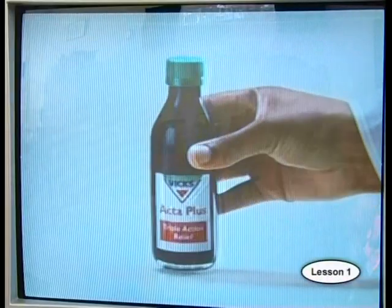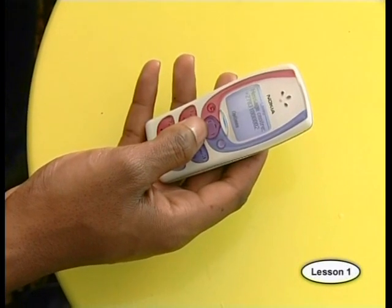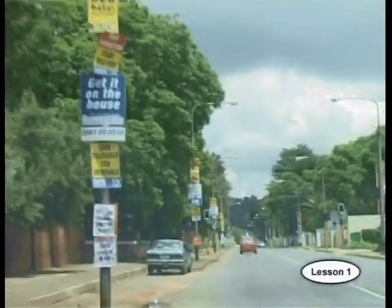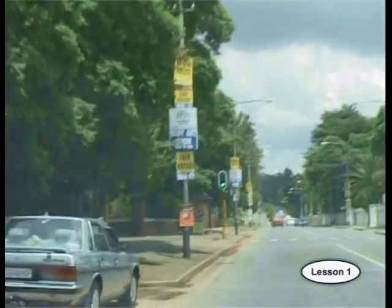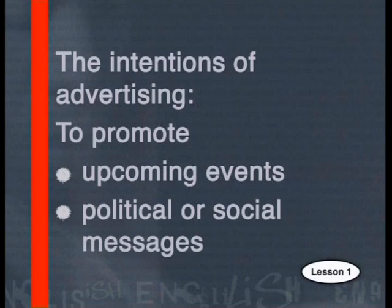Now, if you were really paying attention, you may also recall what things were being advertised. Some adverts were trying to get you to buy products. Some adverts were trying to get you to use services. Others were letting you know about upcoming events. And some were promoting political parties or social messages. Each of the adverts we've just seen had a different aim or intention. Adverts have a range of intentions including selling products or services and promoting upcoming events and social messages.